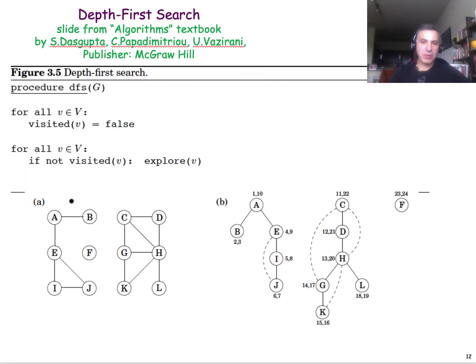Suppose that we start from this node A on this graph this time. Let's look at the values of pre and post timestamps that each node gets. The first number that you see is the pre-timestamp, the second number is the post-timestamp. So we start with A,